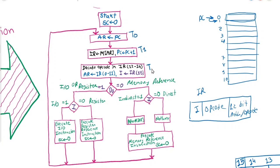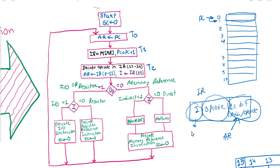At T2, we decode the opcode and find out the type of instruction. T0, T1, T2 are timing signals from the control unit. The 12 bits (bits 0 to 11) will be stored into the address register, assuming they may be used as an address. Bit 15 will be stored into flag I, which is the indirect flag. The opcode will be decoded using a 3-to-8 decoder.